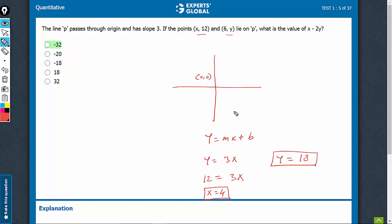The value of x minus 2y would be 4 minus 2 times 18, which is 36, and that turns out to be minus 32. That's the right answer.